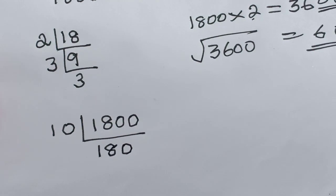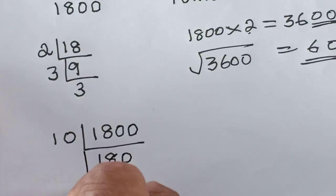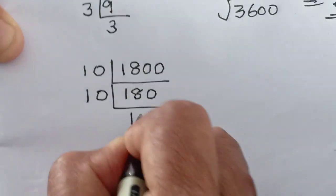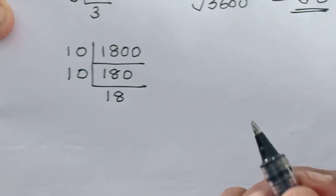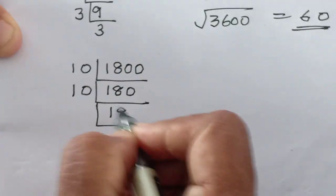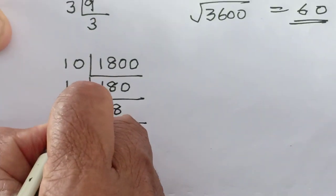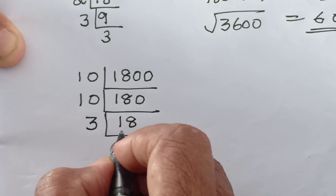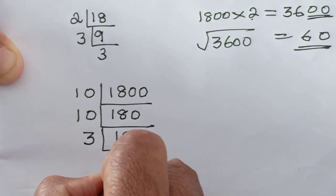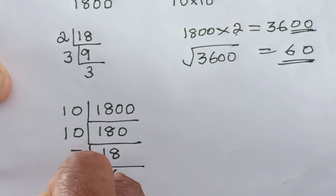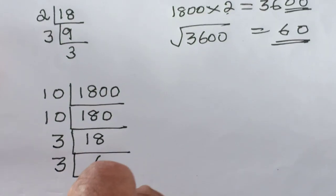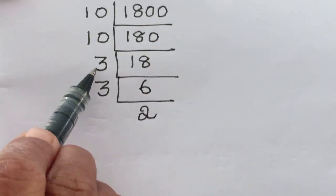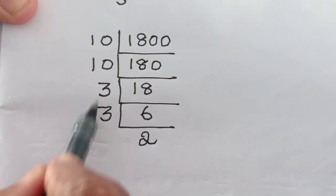180. Next one is what? 10. Next is what? 18. Next, which one? 3 table also you can take. 5 3's are 15. 6 3's are 18. Again 3. 2 3's are 6. Why I have chosen 3 here is? Because in order to get in pairs.